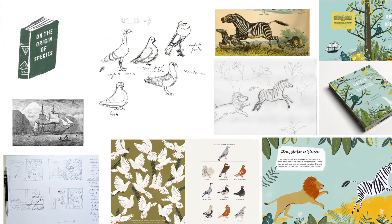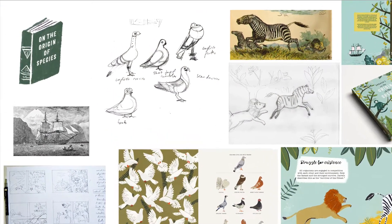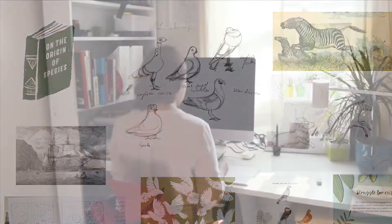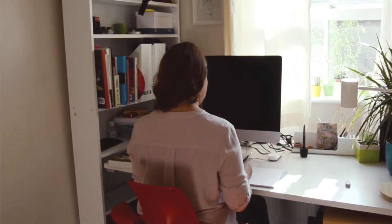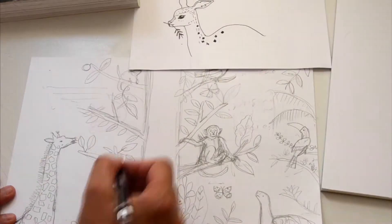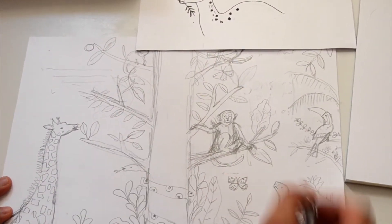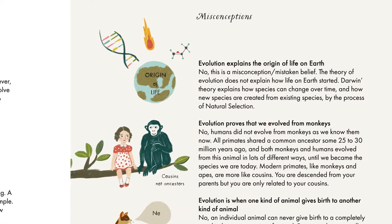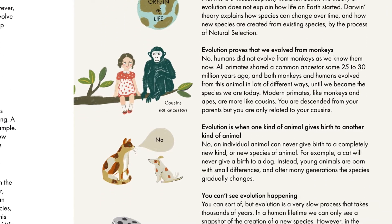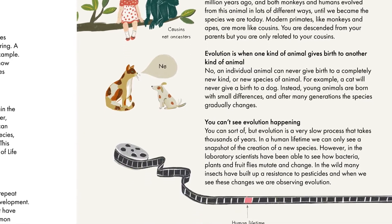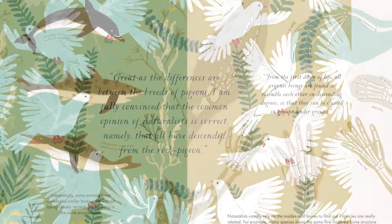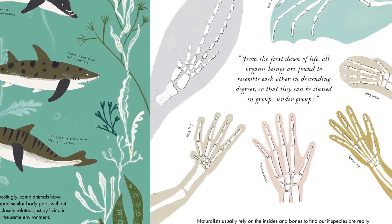The idea for the picture book first appeared during my Master's in Illustration Studies at the University of Hertfordshire in 2017. I came across Darwin's On the Origin of Species, started reading it in the original and I was very inspired by the book. I also became aware that there are many widespread misconceptions about evolution. This inspired me to make a picture book that is artistic, inviting, and at the same time contains accurate scientific information.